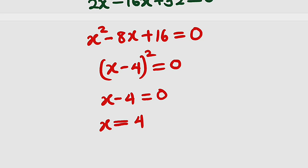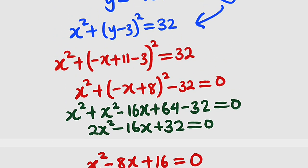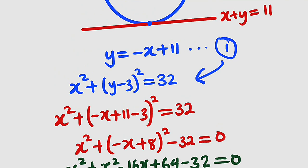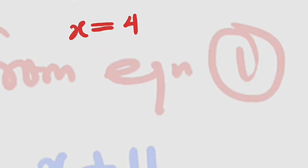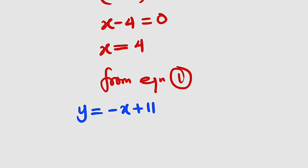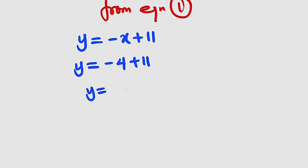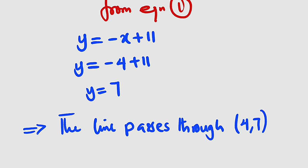But we are not done yet. Let us find the other coordinate because it passes through x equal to 4. We can use any of this equation, either equation of the circle or this straight line equation. Let me use equation 1. But x is already 4, so we have y equal to negative 4 plus 11, and negative 4 plus 11 is 7. Therefore, y equal to 7. Therefore, the line passes through 4, 7.